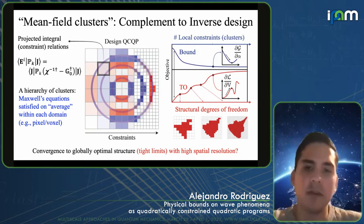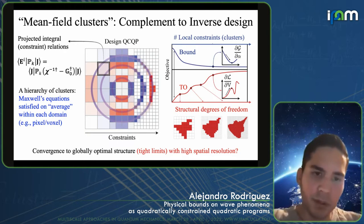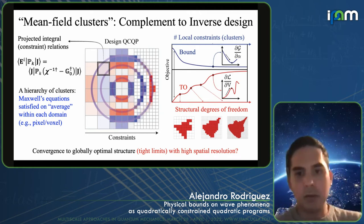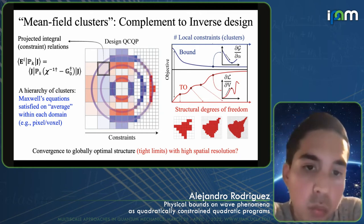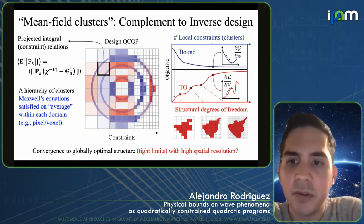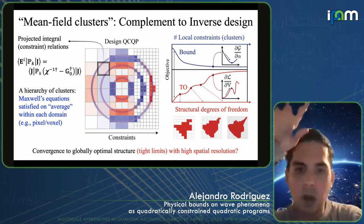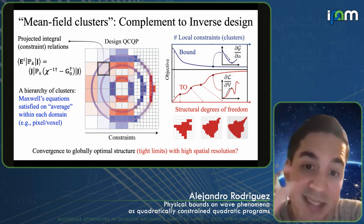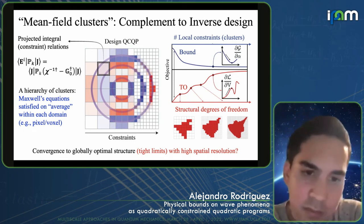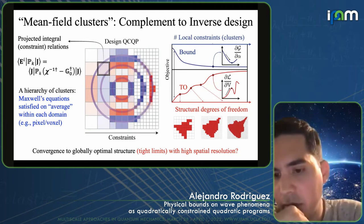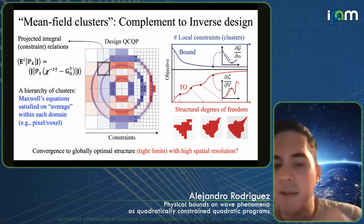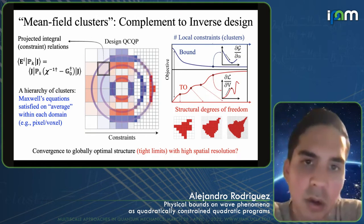At some point, even those things will fail and you have to consider the full electronic problem, or have some quantum mechanical description of the material directly coupled to the wave equations. The scale at which this happens depends on the material — in some materials the Fermi length scale is relevant. Depending on whether you have metals or dielectrics, you start to see quantum effects at different scales.